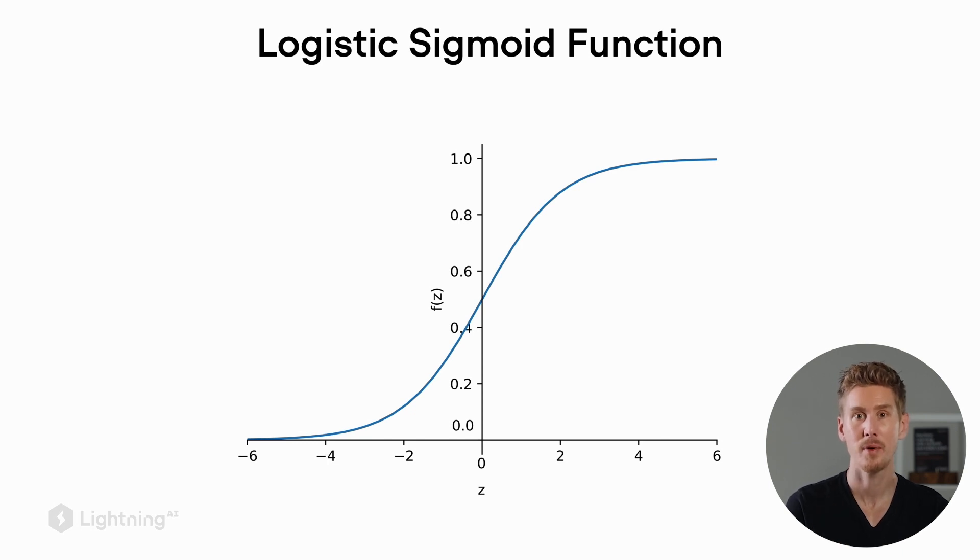Looking at the input point zero, x equals zero, we can see that the output is point five. So if we make the input larger than zero, if we have positive inputs, the logistic sigmoid function will output values greater than point five. And vice versa, if we input negative values into the logistic sigmoid function, the outputs will be smaller than point five.